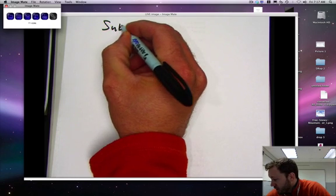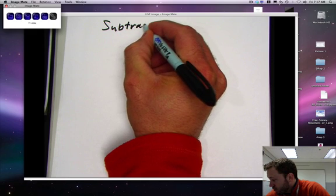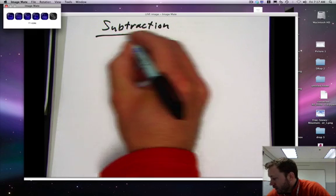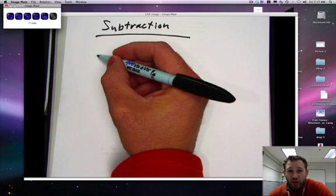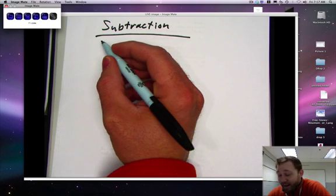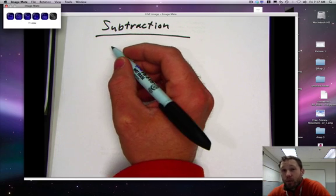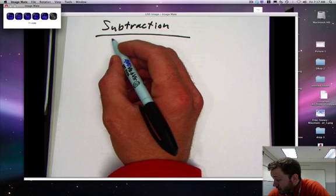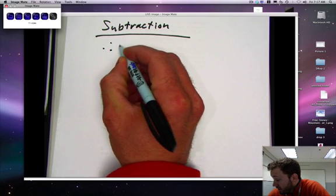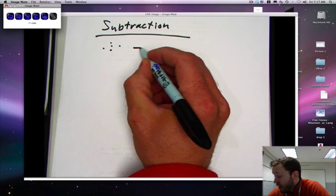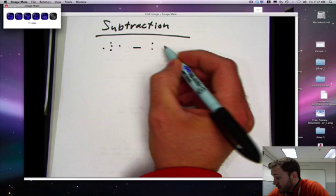We're doing subtraction. And I'm also testing out the Elmo camera. Let's start by using manipulatives, and for that I mean I'm going to use dots. So I'm going to take five dots and subtract two dots.